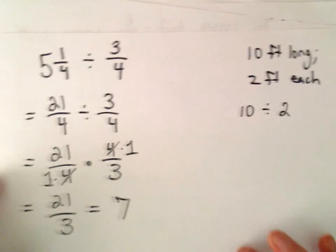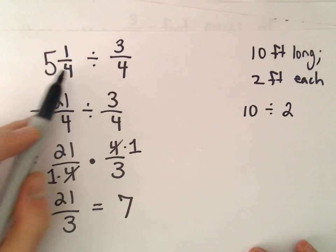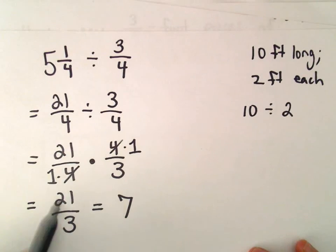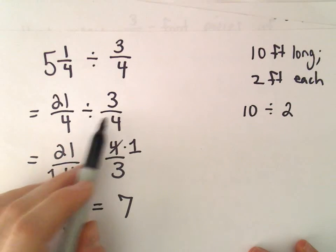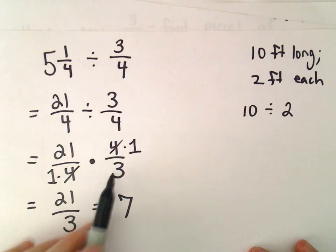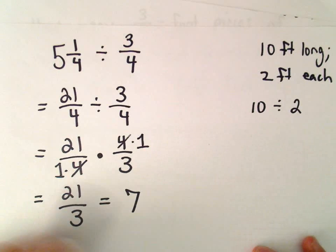And all we're doing, just a little bit of division. You have to make your mixed number into a fraction. Division by a fraction turns into multiplication by the reciprocal. And then it's just a matter of doing the arithmetic and simplifying it down.